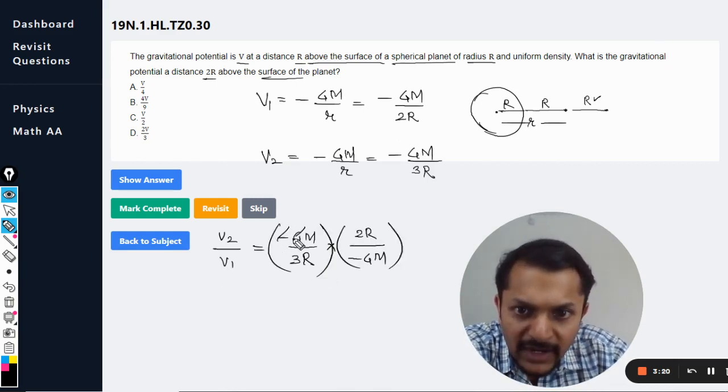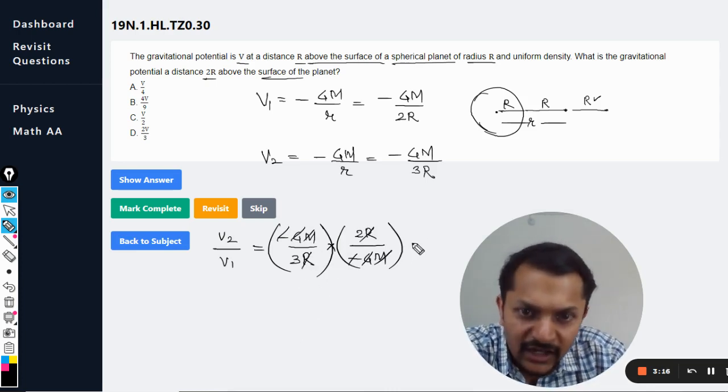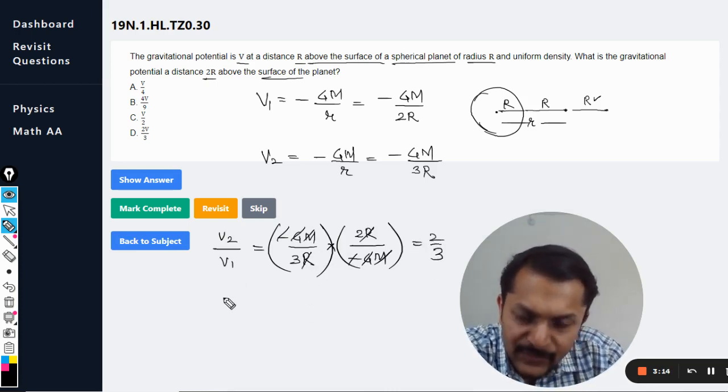Minus GM minus GM is constant, they can get cancelled out. R and R is canceling out, it is just 2 by 3. So the final potential is coming out to be 2 by 3 of the initial potential, and hence the answer is D.